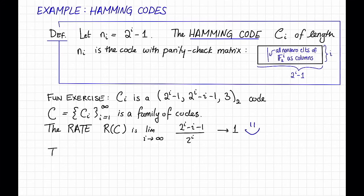On the other hand, the relative distance, delta(C), is the limit as i goes to infinity of the relative distance of the i-th code, that's 3 divided by 2^i, and that goes to 0 real fast. So that's not so good.